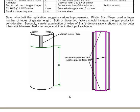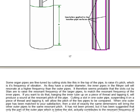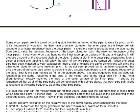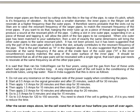As they have smaller diameter, the inner pipes in the Meyer cell will resonate at a higher frequency than the outer pipes. It therefore seems probable that the slots cut by Stan are to raise the resonant frequency of the larger pipes to match the resonant frequency of the inner pipes. If you want to do that, hanging the inner tube up on a piece of thread and tapping it will produce a sound at the resonant pitch of the pipe. Cutting a slot in one outer pipe, suspending it on a piece of thread and tapping it will allow the pitch of the two pipes to be compared. When one outer pipe has been matched to the same dimensions will bring the other pipes to the same resonant pitch. It's not been proved but it's been suggested that only the part of the outer pipe which is below the slot actually contributes to the resonant frequency of the pipe, that is the part marked H in the diagram above.